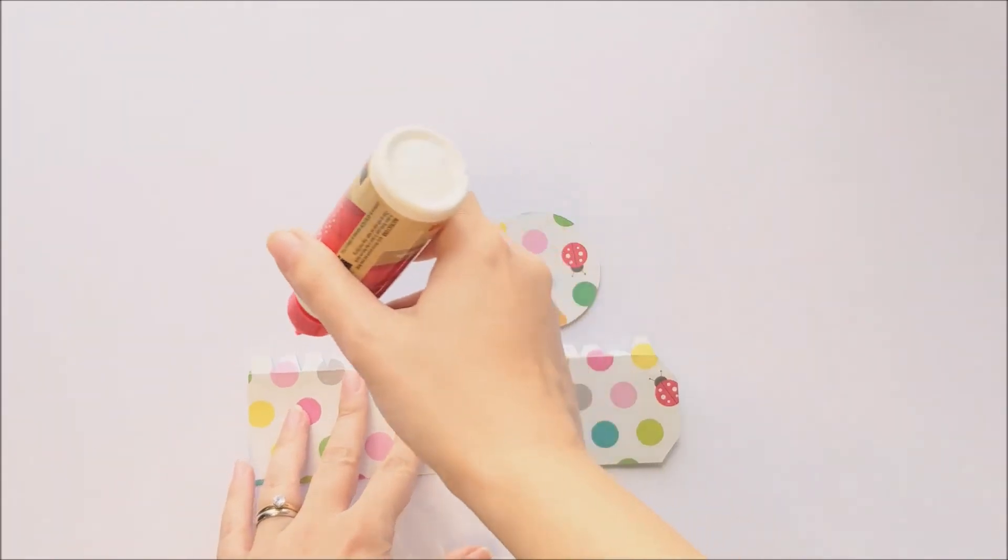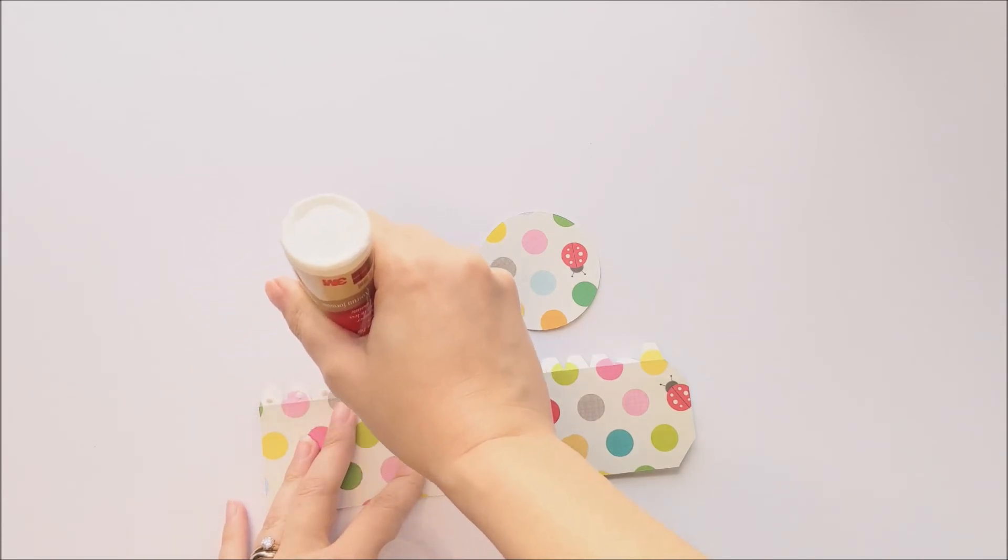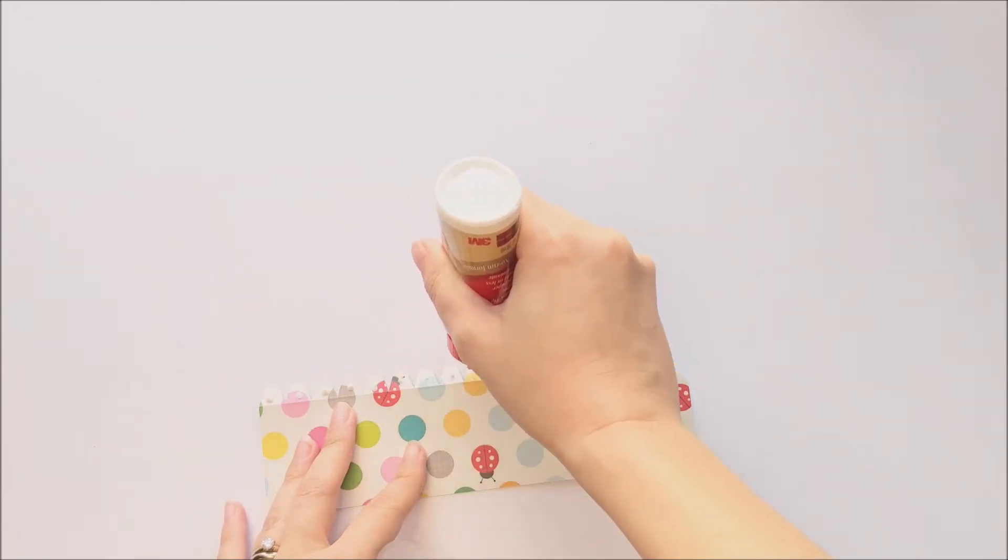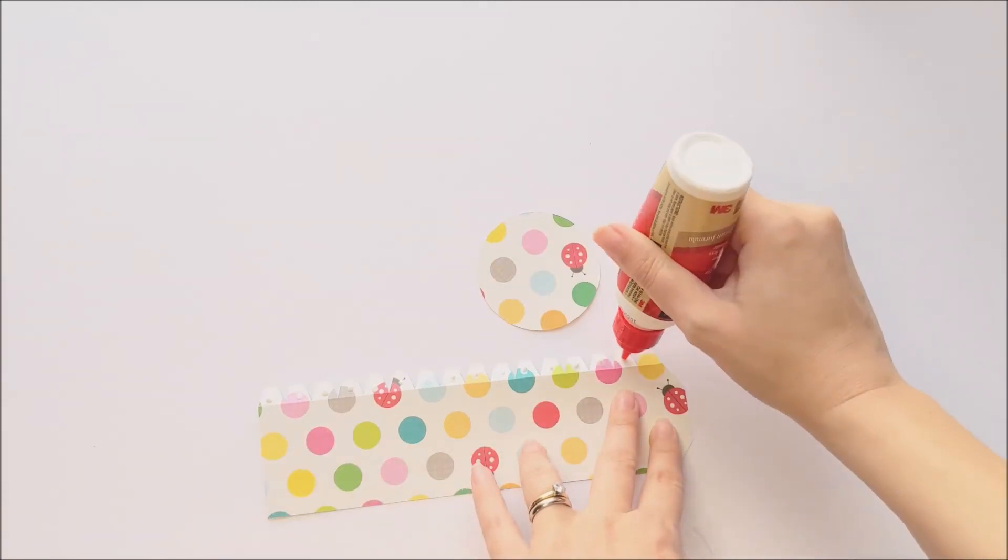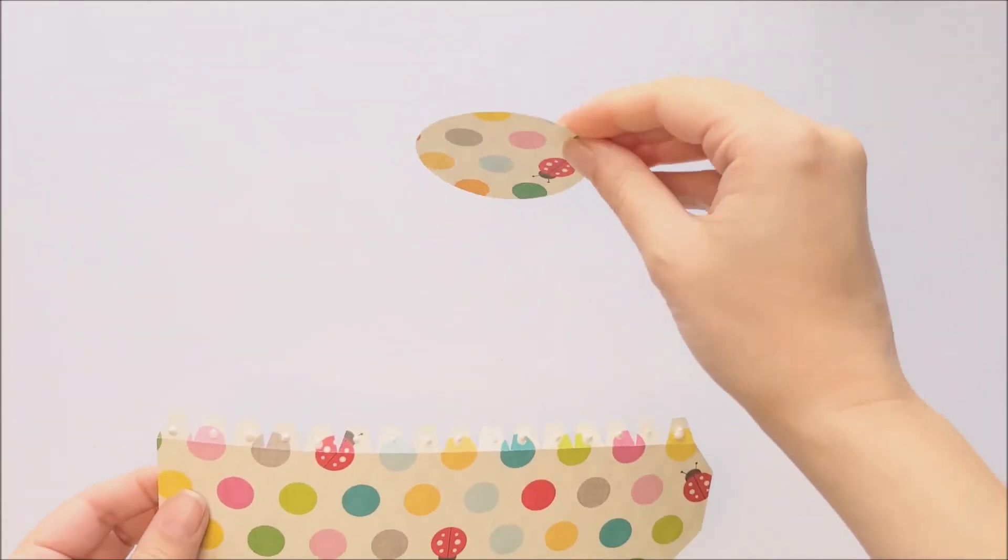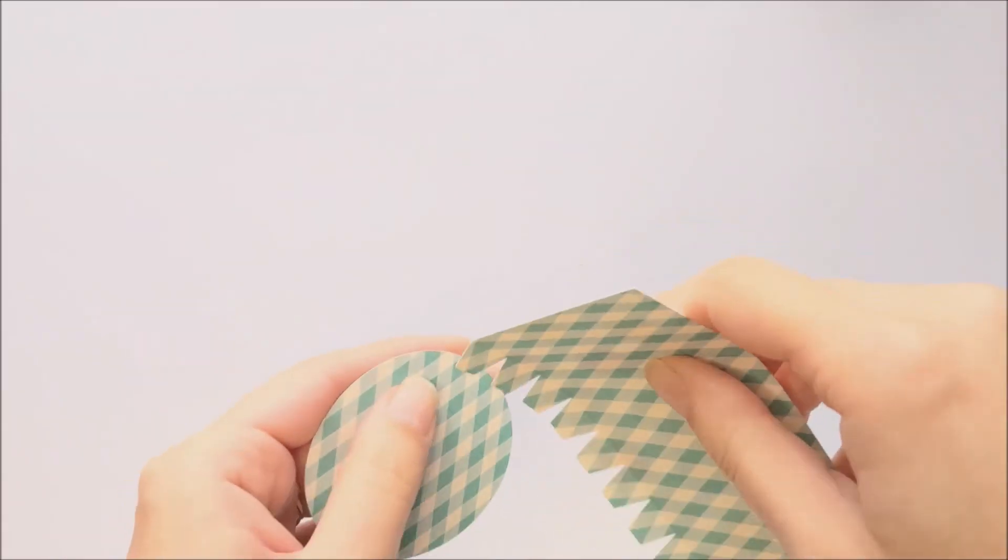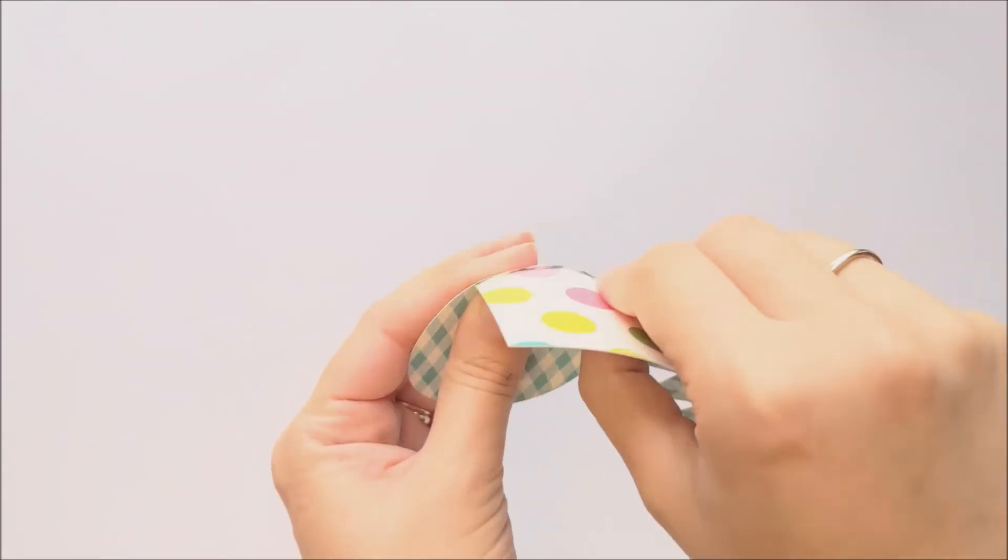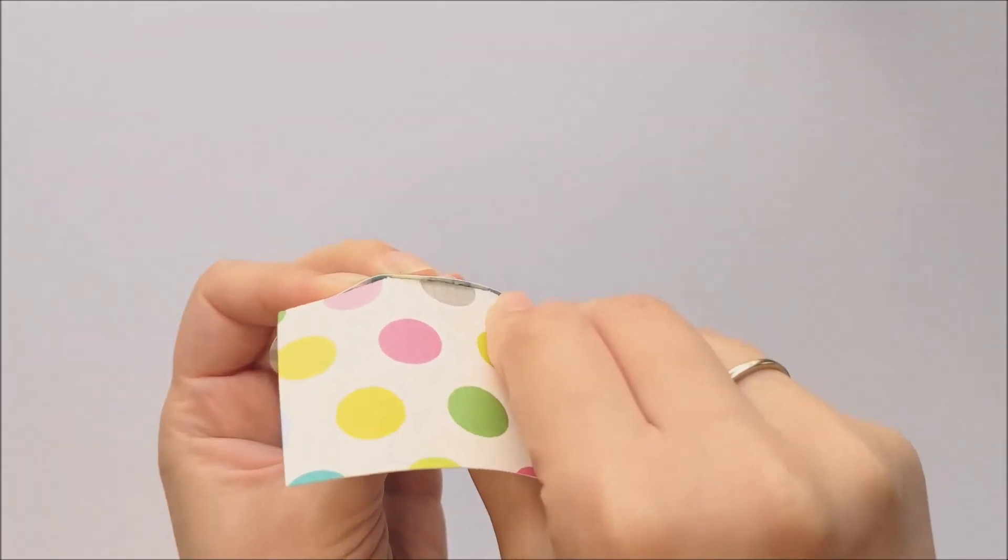And then we're going to repeat that exact same process for our box piece. So again, I'm going to put a tiny dot of glue on each of those little tabs. And we'll glue those down one by one to the bottom of our box. We're going to follow the shape of our circle.